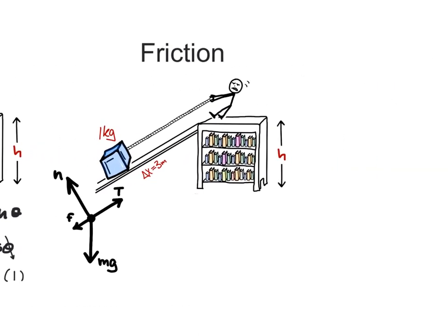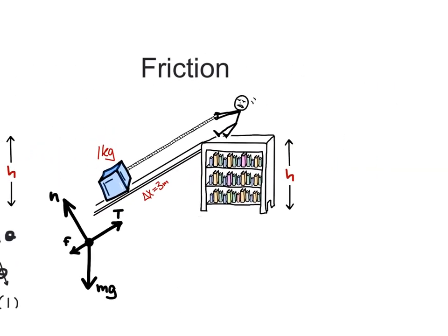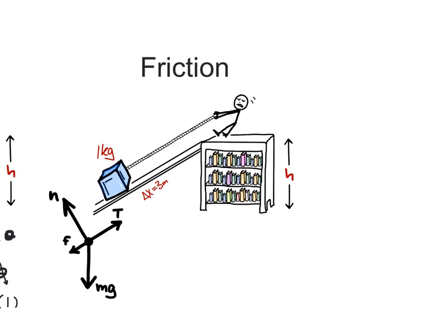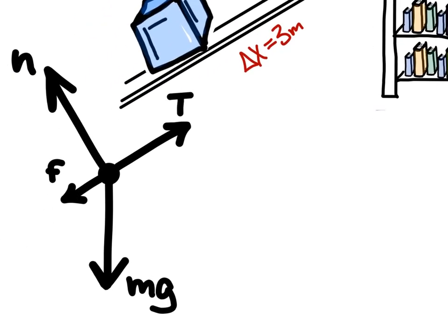Now let's consider the example of pulling the block up the ramp with friction. Now tension not only has to counterbalance the component of gravity down the ramp, but also has to overcome friction resisting the slide.